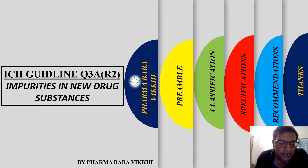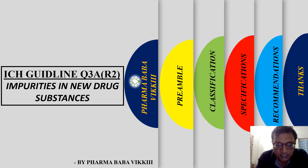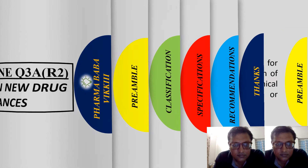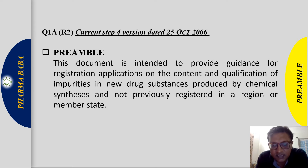Hello, warm greetings and welcome to my channel. In the process of upskilling ourselves, today we will cover ICH guideline Q3A R2. Q3A is a guideline provided by ICH for impurities in new drug substances. The Q3A R2 document is intended to provide guidance for registration applications on the content required to be produced in the specification.